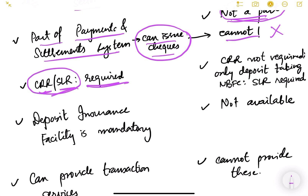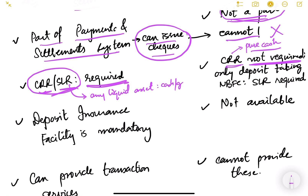Cash Reserve Ratio (CRR) and Statutory Liquidity Ratio (SLR) are mandatory regulations that banks must maintain as per RBI regulations. For NBFCs, CRR — which is pure cash — is not required. However, only deposit-taking NBFCs are required to maintain SLR, which can be any liquid asset such as cash, gold, or government bonds.